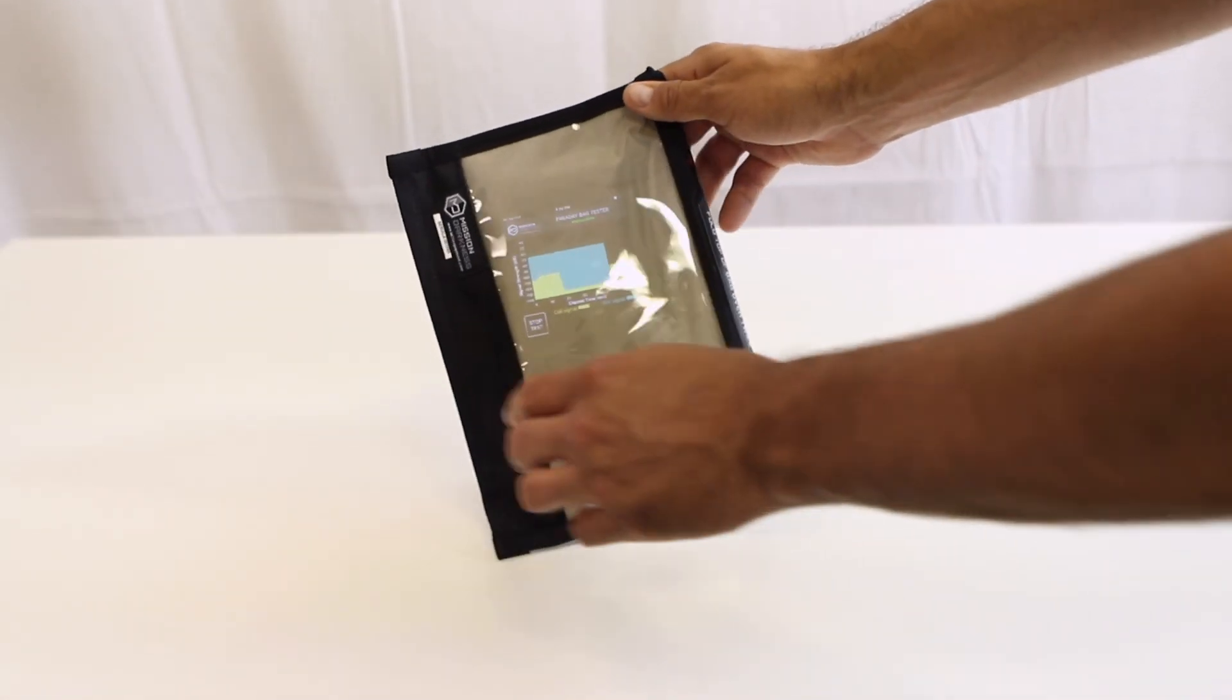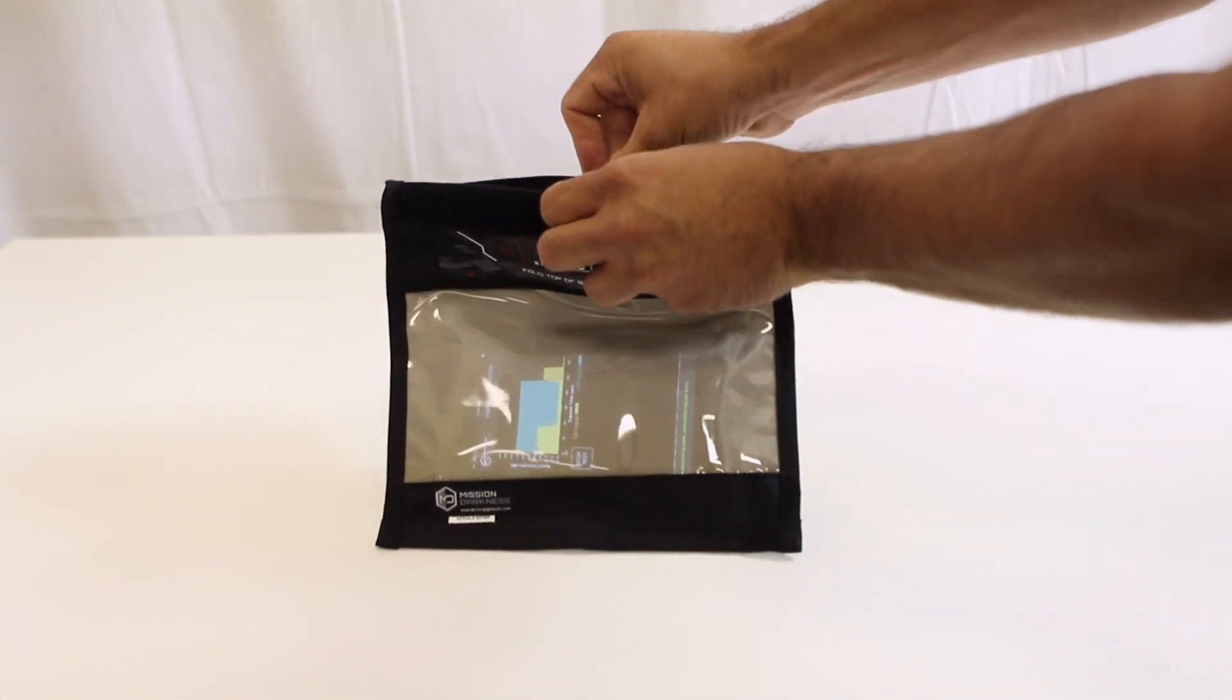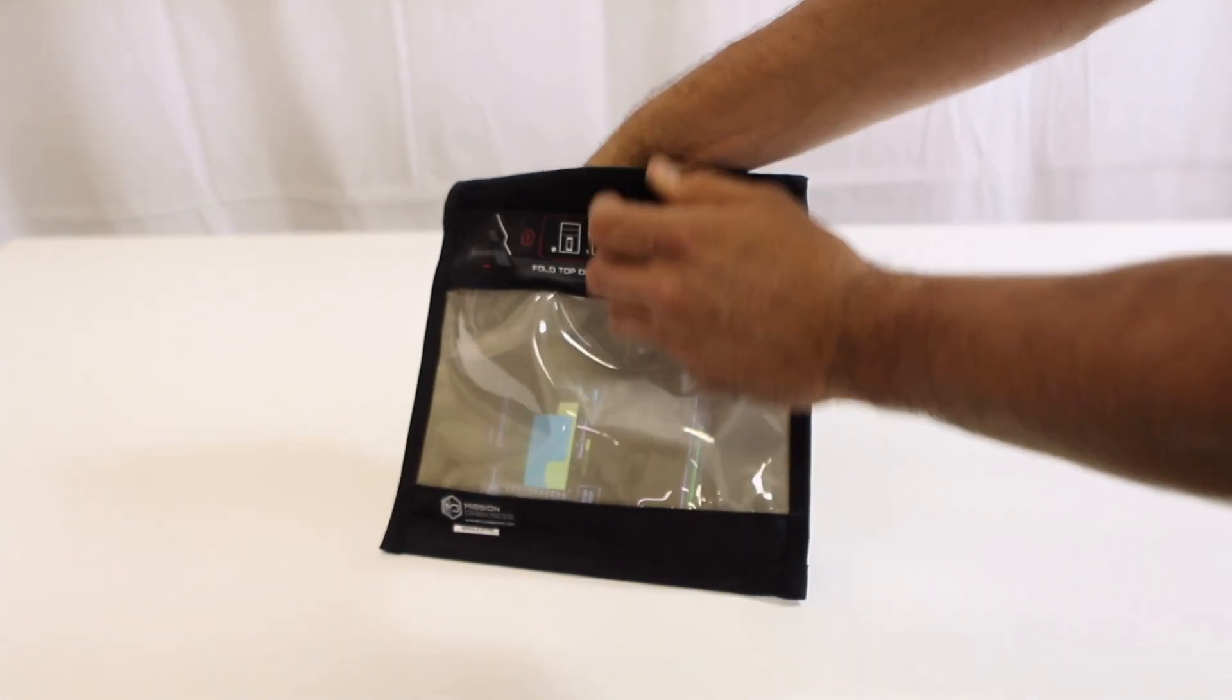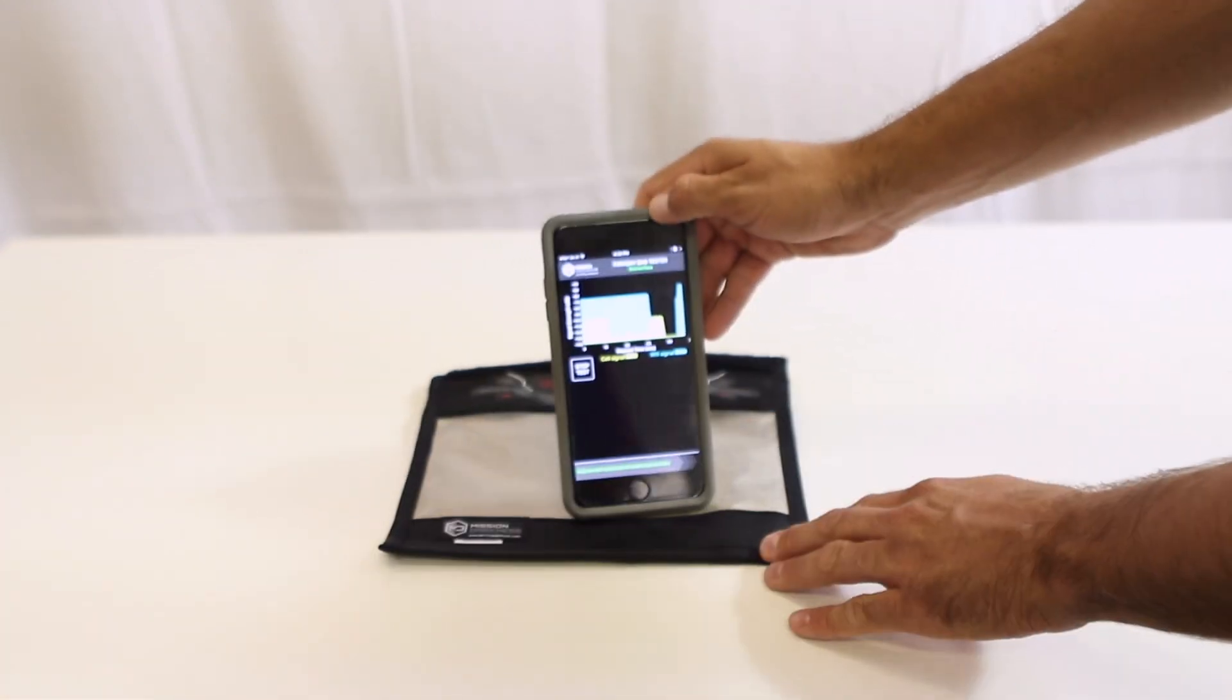In a matter of about 20 or 30 seconds, this bag actually blocks the signal right away, but the phone is still trying. The router is still trying to get to the phone. It just takes a minute to register.